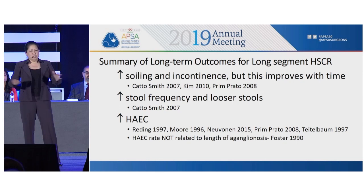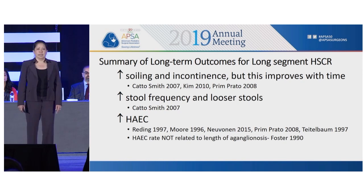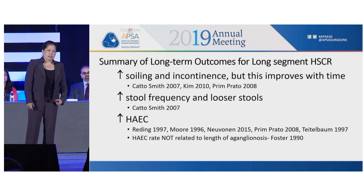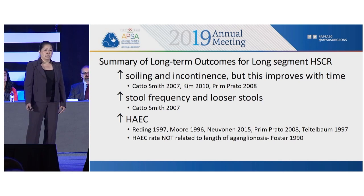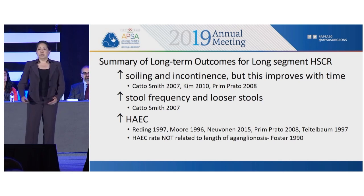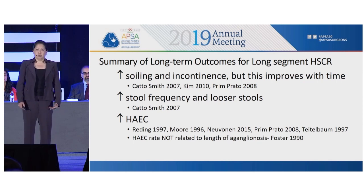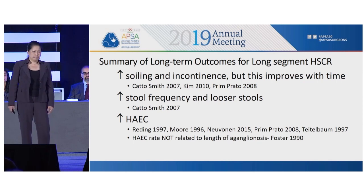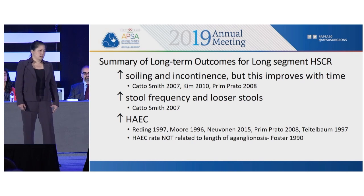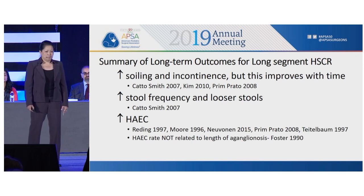Looking at the summary of those 10 papers specifying long-term outcomes for long-segment disease, patients were found to have increased soiling and incontinence — but overall this improves with time — increased stool frequency and looser stools, which makes sense as they have less colon, and a higher rate of Hirschsprung's-associated enterocolitis as well.